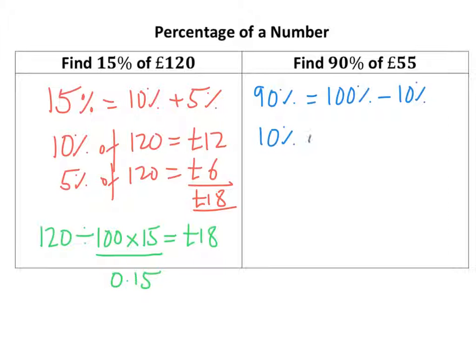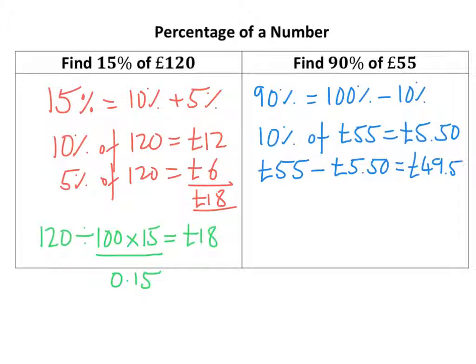So 10% of £55 is £5.50, and I'm going to do £55 take away £5.50, which equals £49.50. So there you go, that's one way of doing it without a calculator.